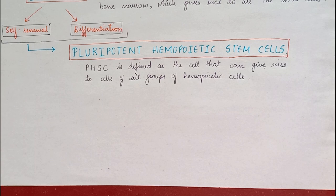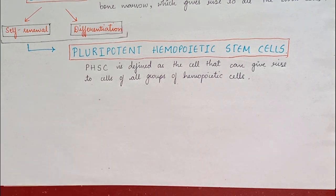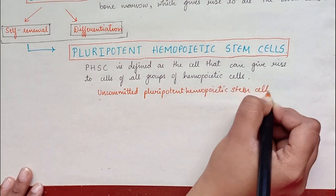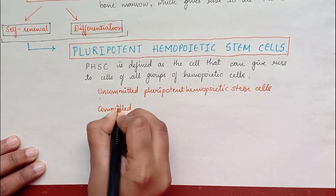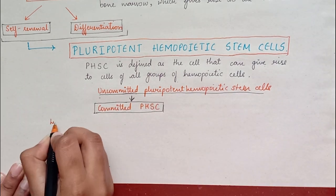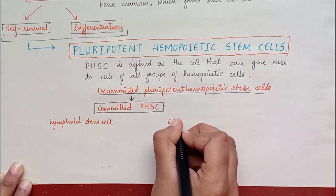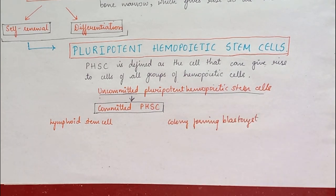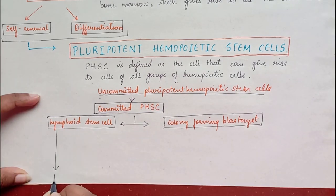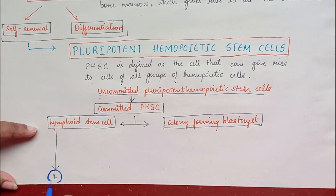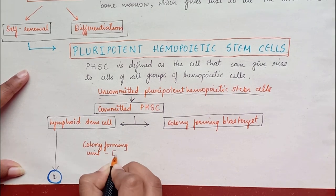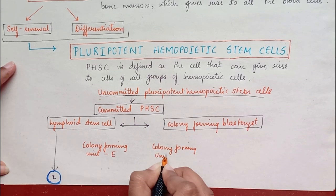In early stages, the pluripotent hematopoietic stem cells are not committed to form any single type, hence called uncommitted, which later become committed. The committed PHSC cells are of two types: lymphoid stem cells, which give rise to lymphocytes and natural killer cells; and colony forming blasts, which give rise to myeloid cells. Myeloid cells are the blood cells other than lymphocytes. When grown in cultures, these cells form colonies, hence the name colony forming blasts.